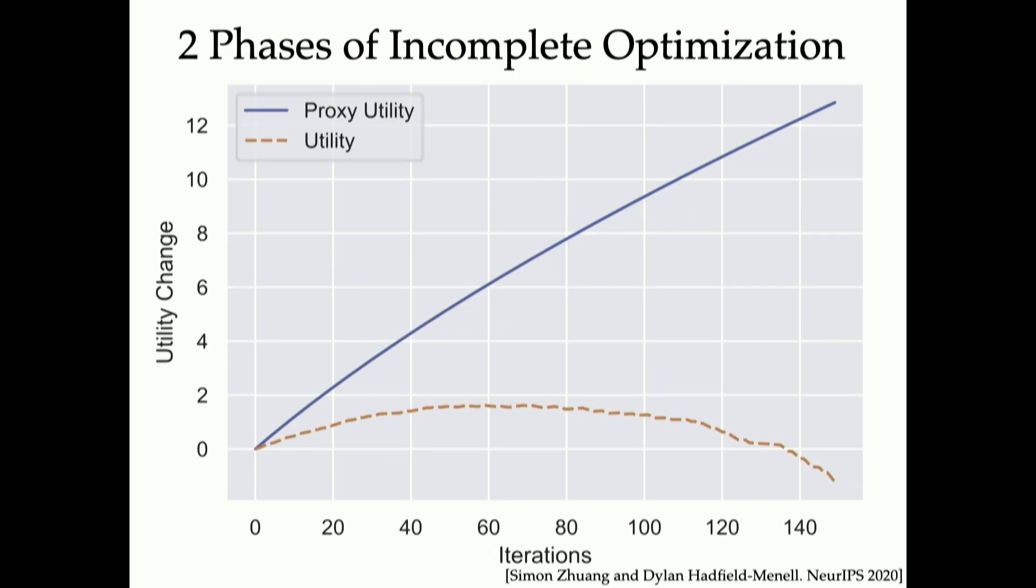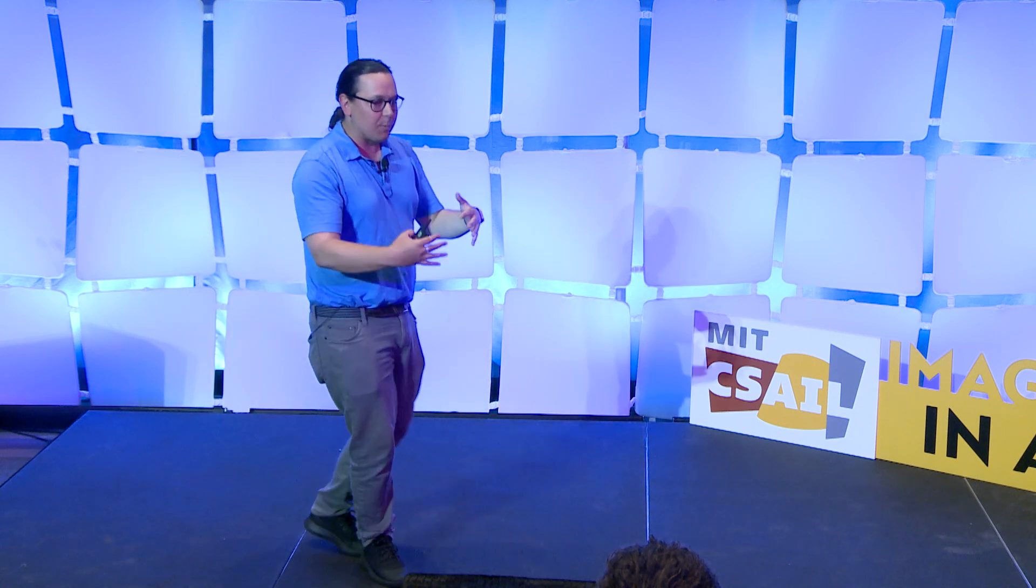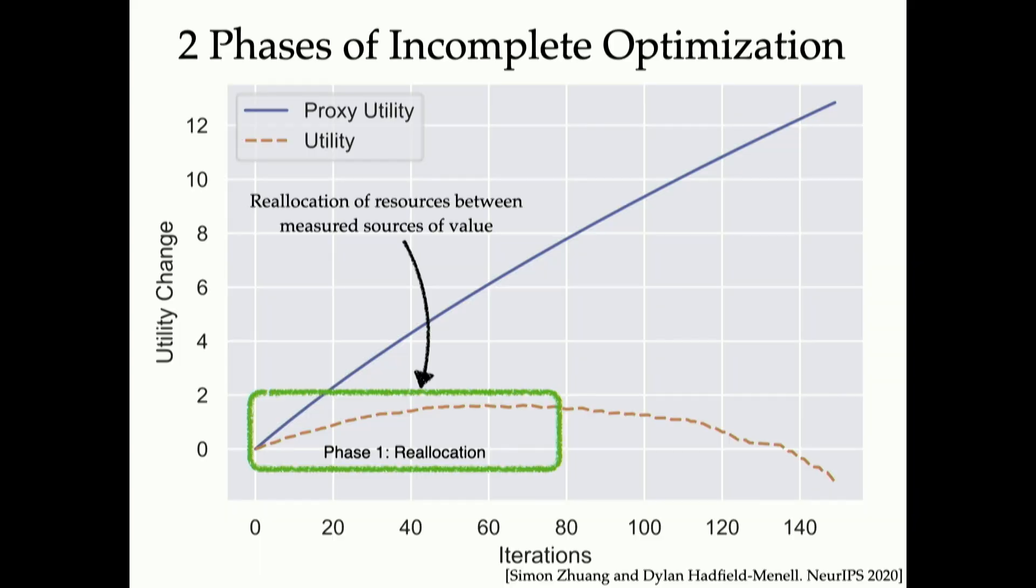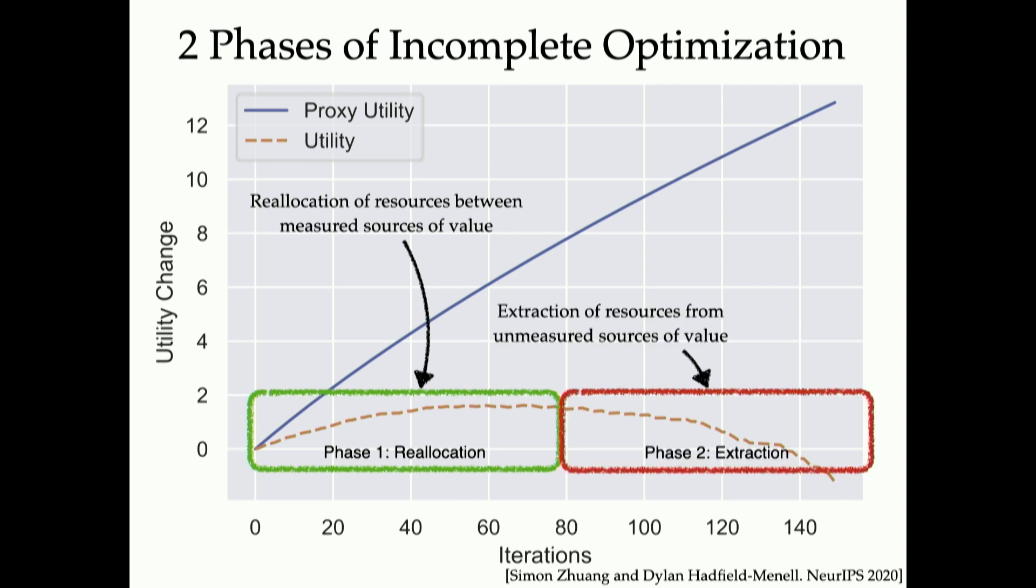And you can think of this as there being two phases of incomplete optimization. In phase one, where incomplete optimization works, you're largely reallocating resources between the things you can measure. This is good. This is sort of removing slack from the problem in some sense. But at some point you hit Pareto optimality there. There's nothing you can do by just reassigning things between those values. Instead, what the optimization switches to do is extracting resources from the things you're not measuring and reallocating them back to the things that you are measuring. And this is a fundamental property of optimizing systems that's very hard to work around.